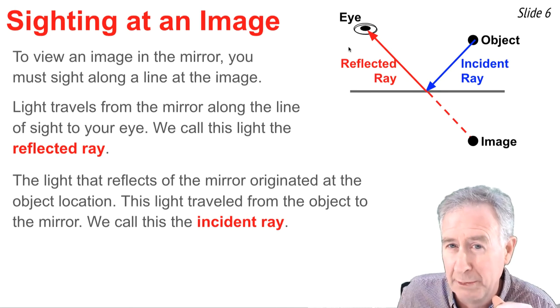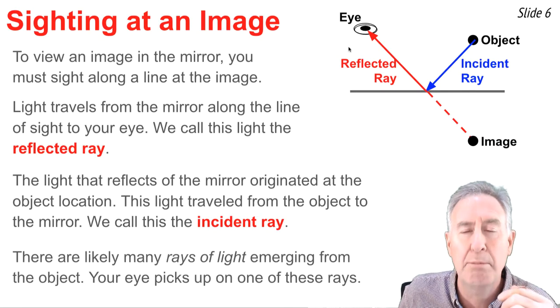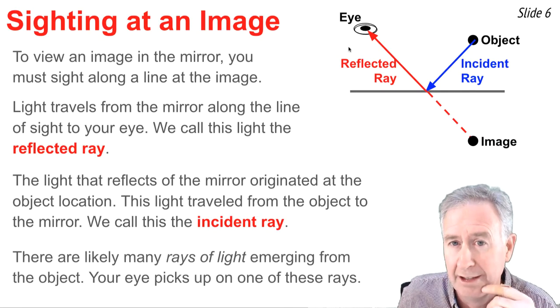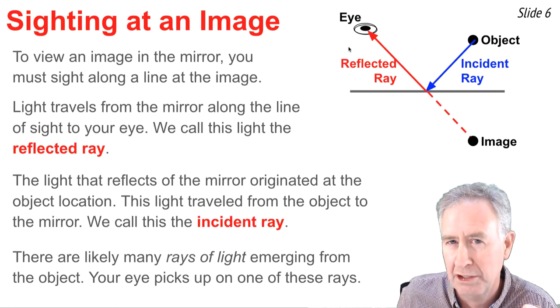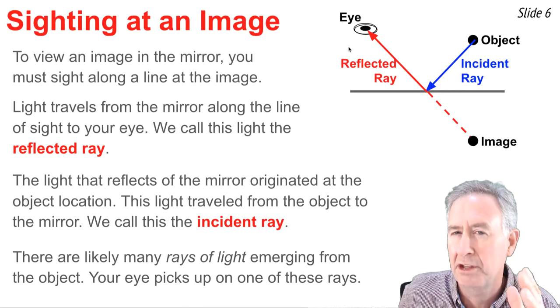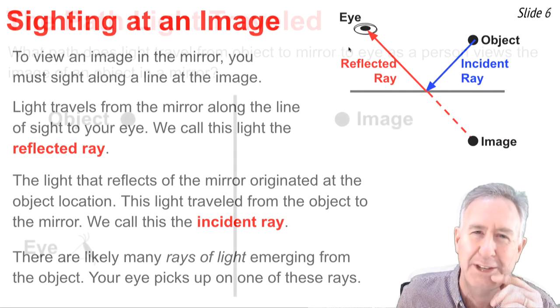We call this the incident ray. Now there's likely multiple rays that are approaching the mirror from the object that hit the mirror. But to see this image from this eye location, you have to rely upon this single set of incident and reflected rays.